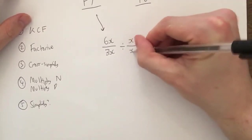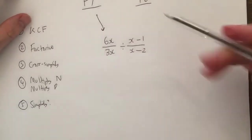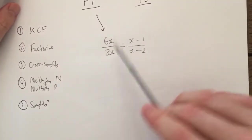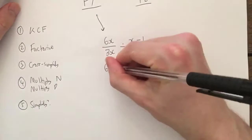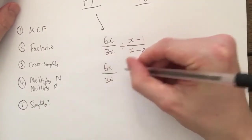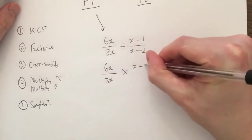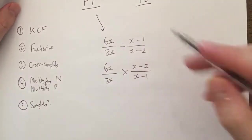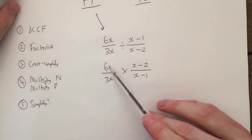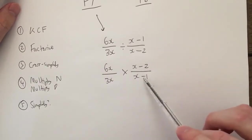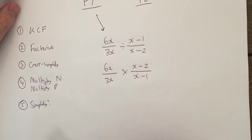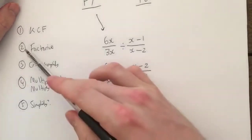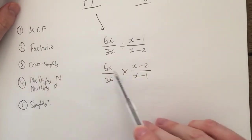First thing we think, dividing algebraic fractions: keep change flip. So that will become 6x over 3x multiplied by x minus 2 over x minus 1, because we're flipping that. Now I would now look, can I factorize? Can't factorize that, can't factorize that, nor that, nor that, so I can't do that. Can I cross simplify? The 3x and x minus 2 have anything in common? Nope. The 6x and x minus 1 have anything in common? Nope. So therefore I can't do that.